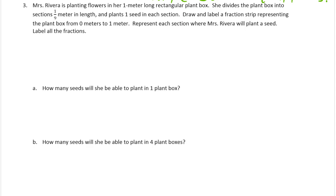Mrs. Rivera is planting flowers in her 1 meter long rectangular plant box. Okay, a long rectangular box, that's going to be a tape diagram. She divides the plant box into sections 1 9th of a meter in length, and plants one seed in each section. Draw and label a fraction strip representing the plant box from 0 meters to 1 meter. So this is a lot like what we've just been doing. We're drawing a tape diagram and then labeling it like it's a number line.